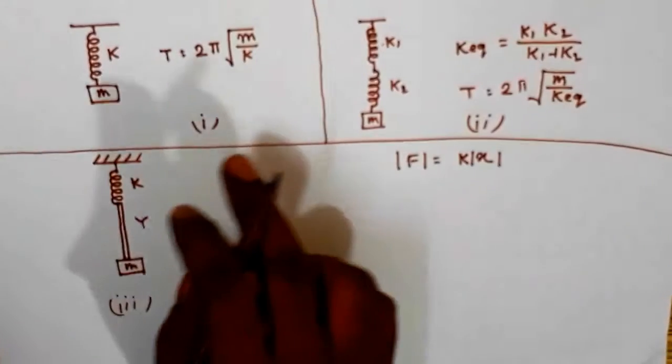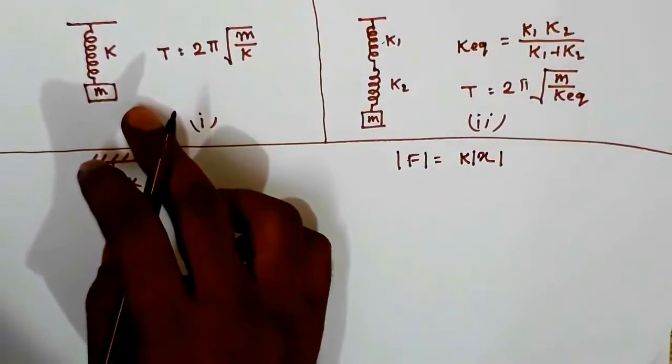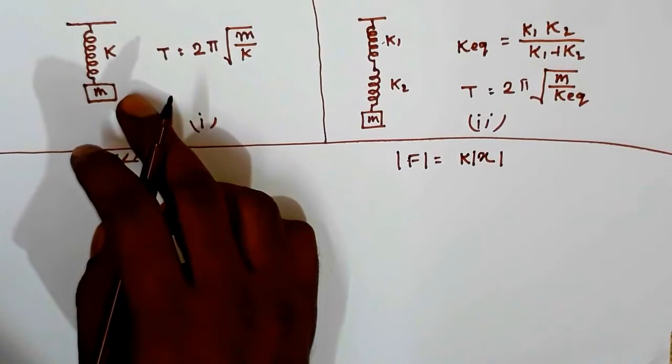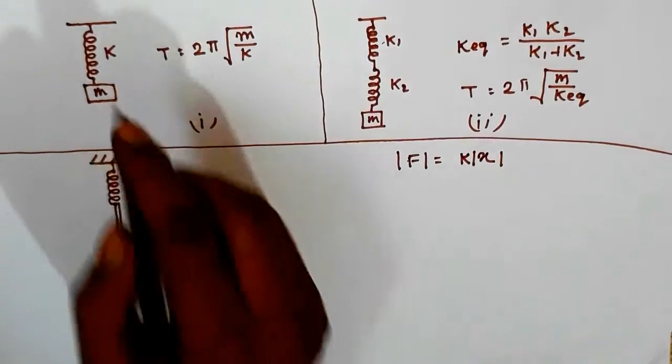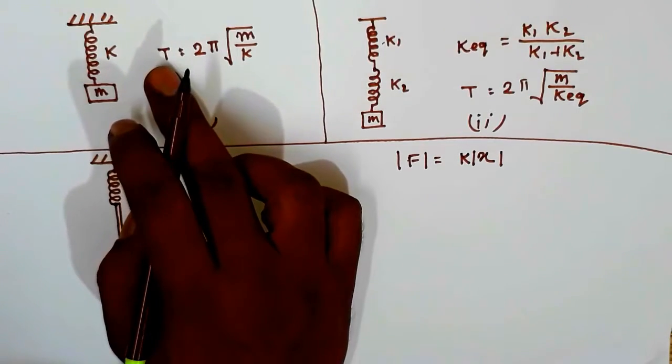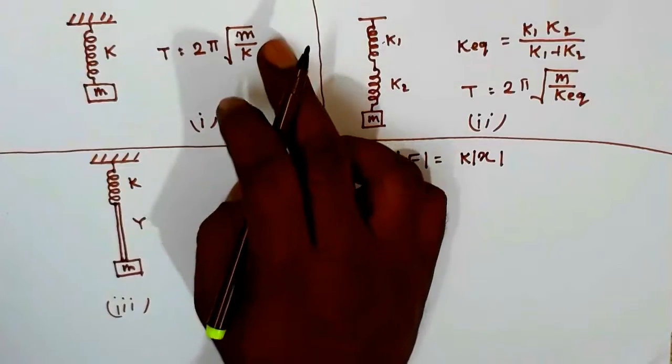Hello students, you all know about a mass spring system and its oscillation. Here we have a mass spring system which has a mass connected with a spring in a vertical plane. The spring is hanging from a ceiling and the mass is connected at the lower part of the spring. We know that the time period of oscillation of this mass spring system is equal to 2π√(m/k), where m is the mass of the bob and k is the force constant of the spring.